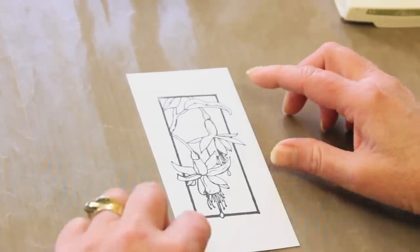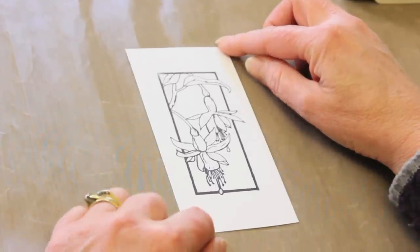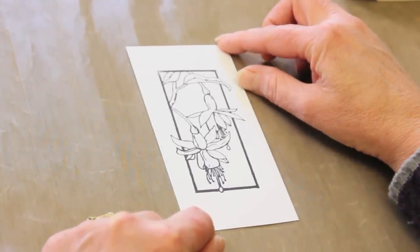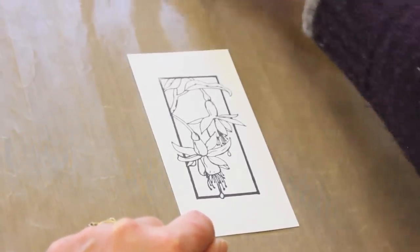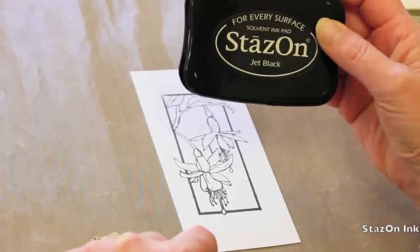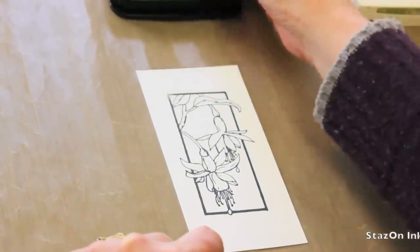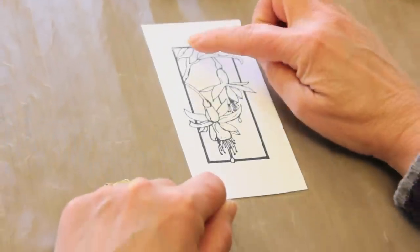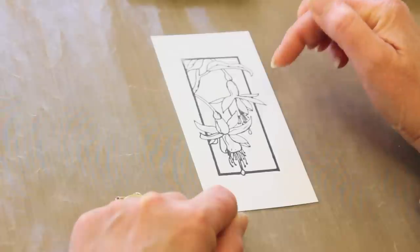I've started with this image that I've stamped onto normal cardstock, and I've stamped it with Stazon ink pad. The reason I've used Stazon is because it won't blur—the edges won't blur when you start coloring.